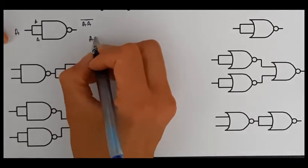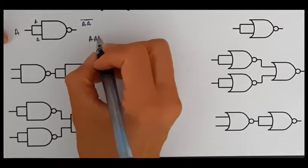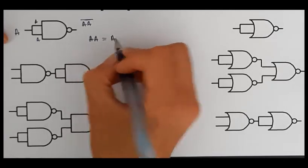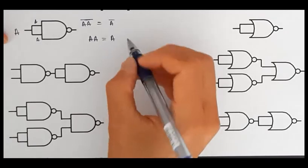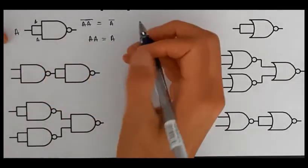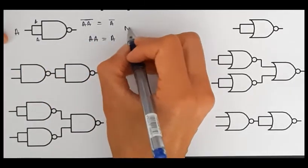Hopefully you know that A AND A together gives you A. So this is actually going to be equal to A NOTted. So this NAND gate configuration is the equivalent to a NOT gate.